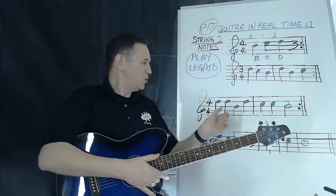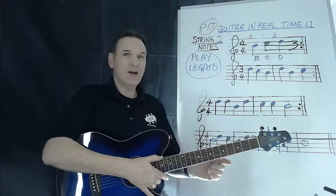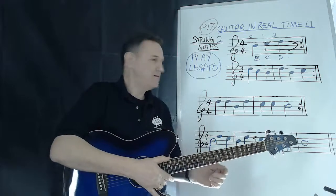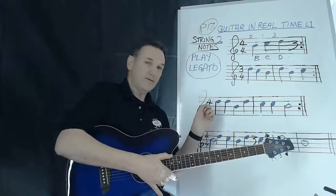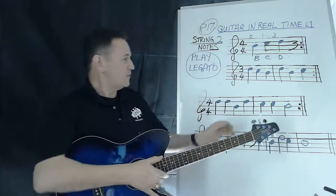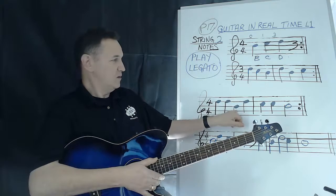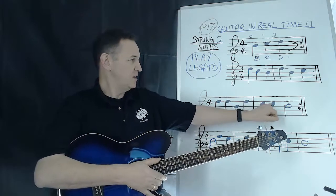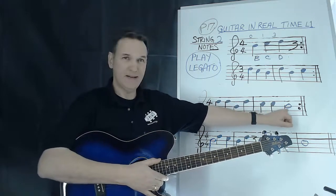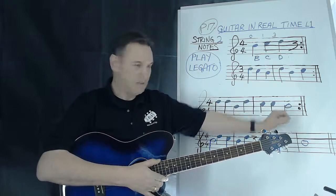So now move down to the third line. Now here we have — we're back to four-four time again, and we've got two Ds, a B, a D, C, C, and a B — a half note B.